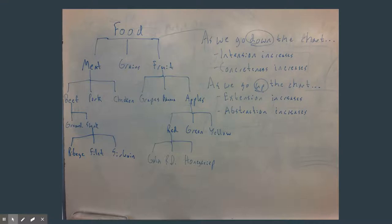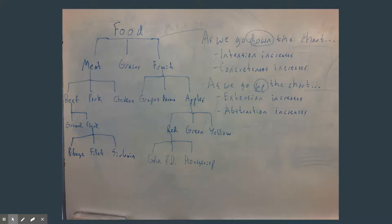As you go down the chart, intention increases. Meat and grains have little in common besides being food. Beef, pork, and chicken share more — they're food from animals. Ground beef and steak share even more — they're food from a cow. Ribeyes, filets, and sirloins have most in common — they're food from a cow served whole, not ground. As we went down the chart, the list of common attributes kept getting bigger, which means intention is getting bigger. So going down the chart: intention increases and extension decreases.